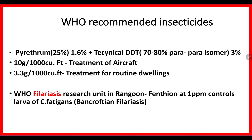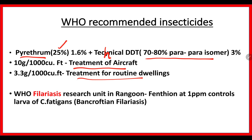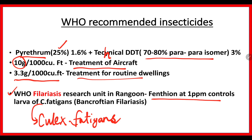We will now conclude with WHO recommended insecticides for treatment of aircraft and for routine dwellings. Pyrethrin 25% and technical DDT 7 (70 to 80% para-isomer) is used for treatment of aircraft — at 10 grams per 1000 cubic feet. Whereas for routine dwellings, it is a lower dose of 3.3 grams per 1000 cubic feet. Also importantly, the WHO Filariasis Research Unit in Rangoon found that Fenthion at 1 ppm controls the larvae of Culex fatigans, which causes Bancroftian filariasis.